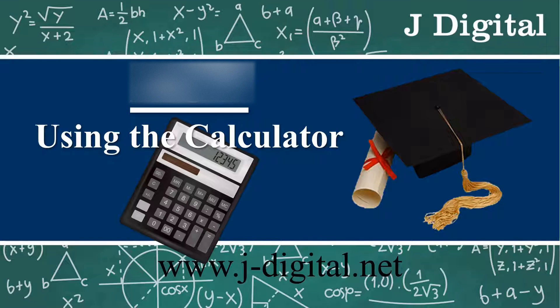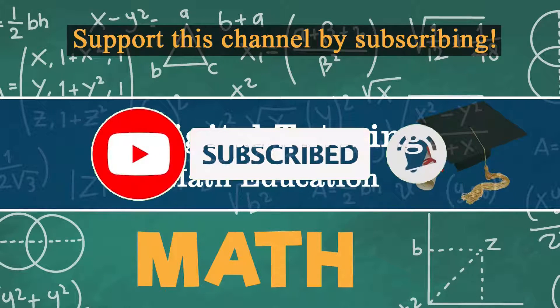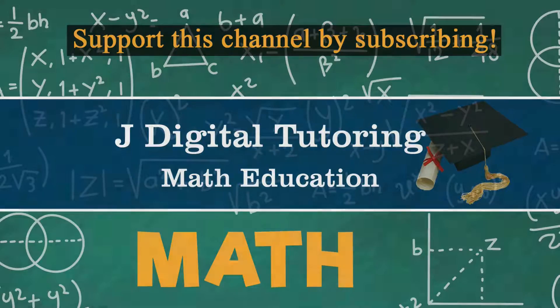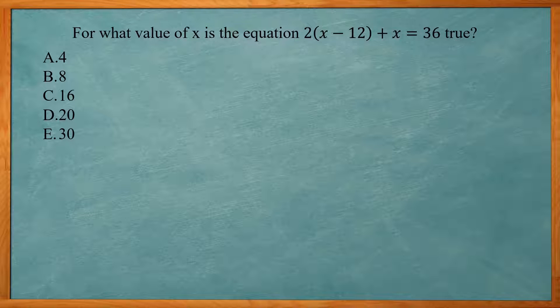In this video I want to show you how to use the calculator to answer math questions on the ACT exam. So in this problem it says, for what value of x is the equation 2 times the quantity x minus 12 plus x equal to 36 true? So we need to figure out what the x value is. I could solve this algebraically by isolating the x, but I want to show you how to do it just using the calculator.